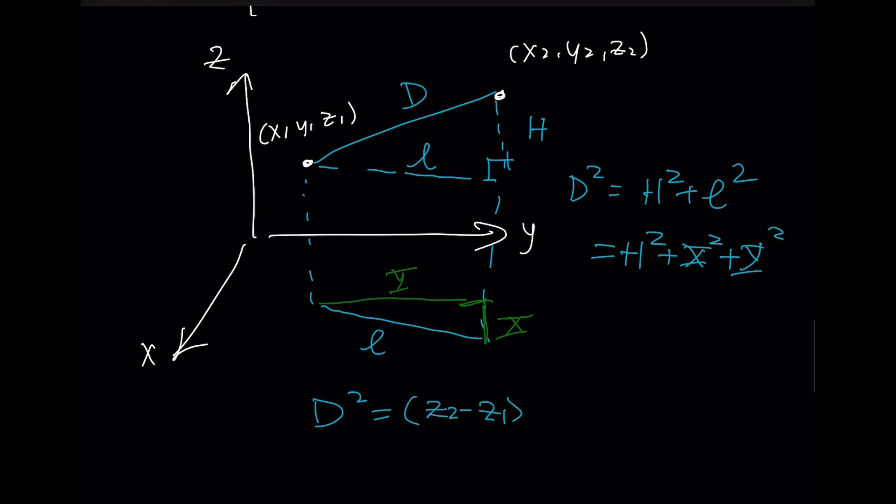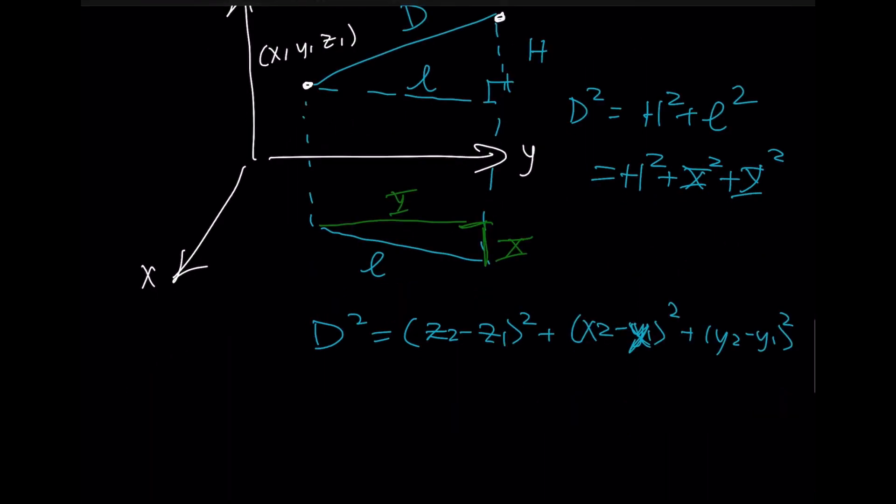So D squared will be Z2 minus Z1 squared and then the X's and the Y's will be the same as they were before. And if D is a positive number then what you're going to get is the usual X2 minus X1 squared Y2 minus Y1 squared Z2 minus Z1 squared.